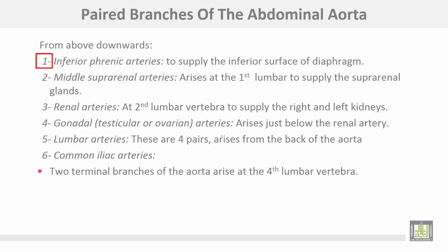The paired lateral branches of the abdominal aorta from above downwards are: number one, the inferior phrenic arteries, supplying the abdominal surface of the diaphragm; the middle suprarenal artery, arising at the first lumbar vertebra to supply the suprarenal glands; the renal arteries at the second lumbar vertebra, supplying the right and left kidneys; and the gonadal arteries, either testicular or ovarian, arising just below the renal arteries.